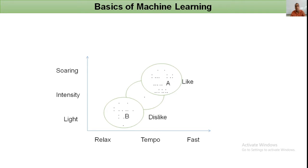If the point is in the middle, we can't predict whether the song is liked or disliked. For these complicated problems, we use machine learning techniques. We draw a circle around that point and observe that the maximum number of liking points fall within this circle. We can identify the maximum chance that the new song falls in the area of liking. This example demonstrates the K-Nearest Neighbor technique.